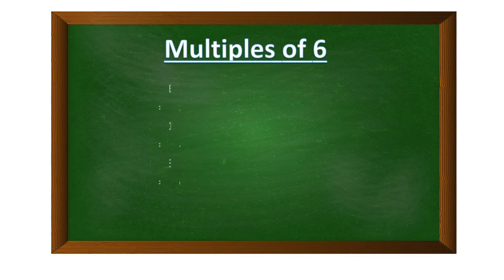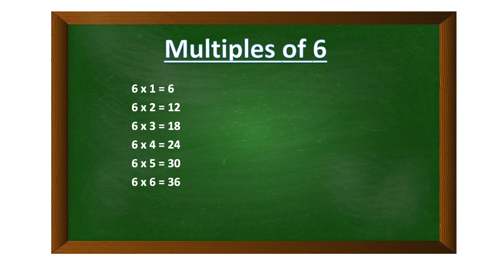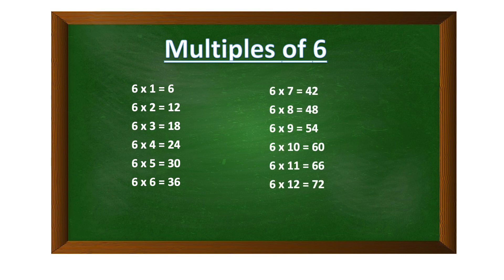Let's look at multiples of six. Six times one is six, six times two is twelve, six times three is eighteen, six times four is twenty-four, six times five is thirty, six times six is thirty-six, six times seven is forty-two, six times eight is forty-eight, six times nine is fifty-four, six times ten is sixty, six times eleven is sixty-six.